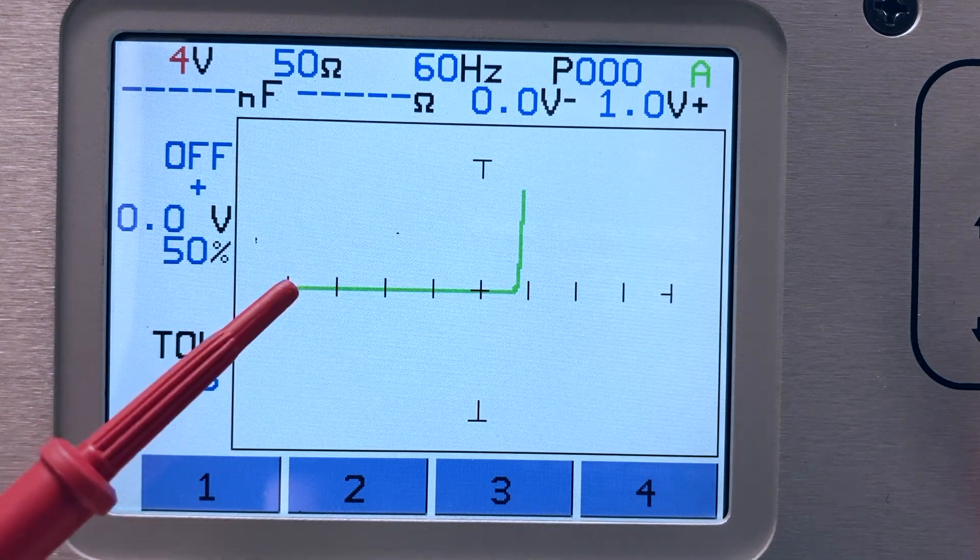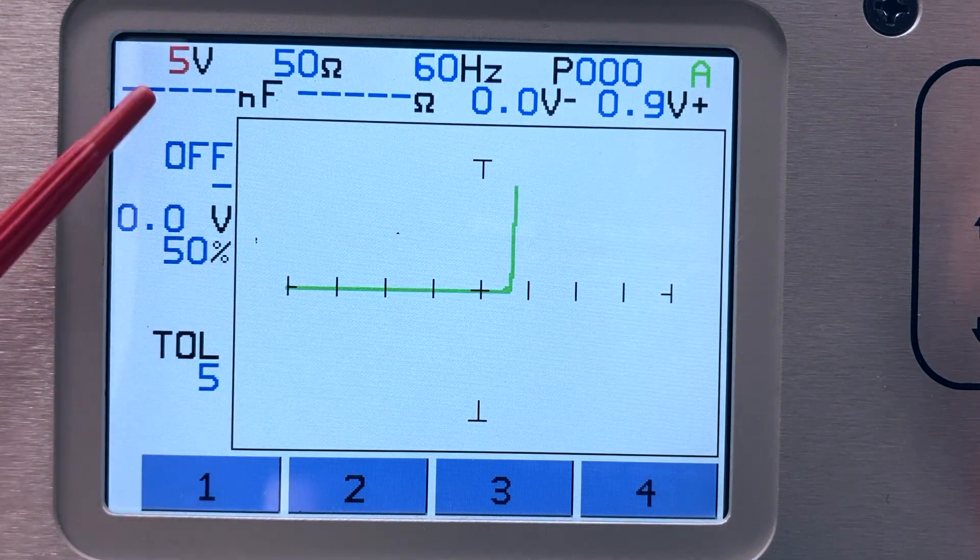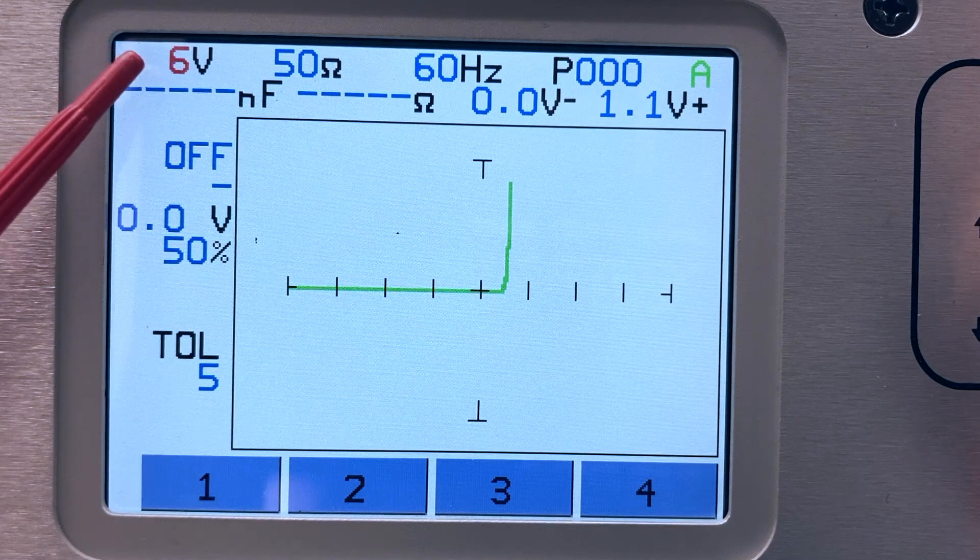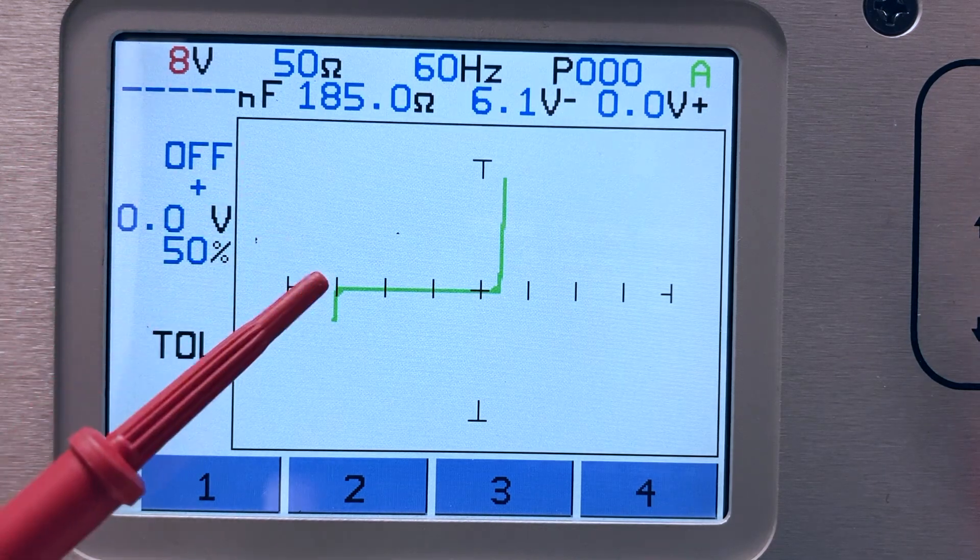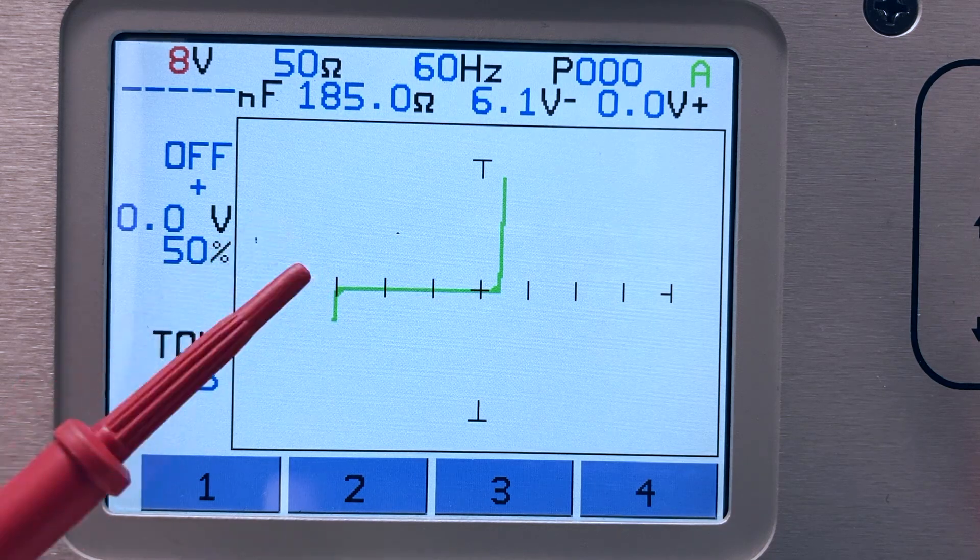The negative peak voltage of the applied sine wave is too low for the Zener diode to reach its reverse breakdown voltage. Raise the tracker back to 8 volts and now you see the reverse breakdown point.